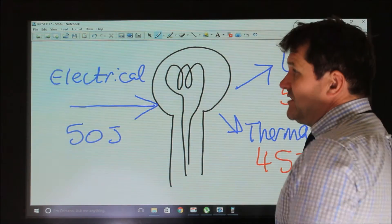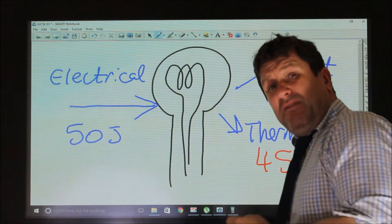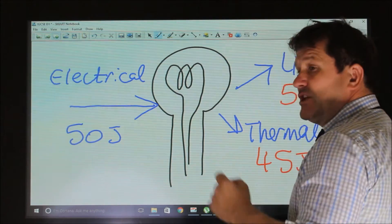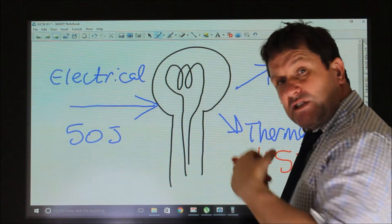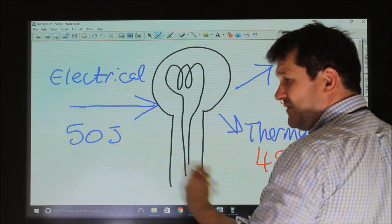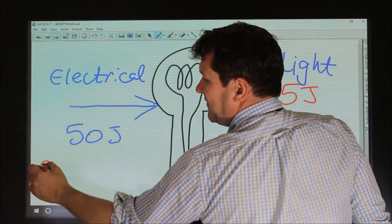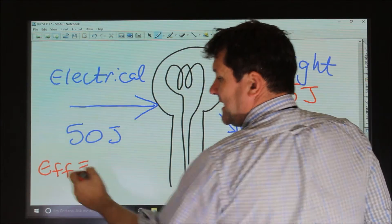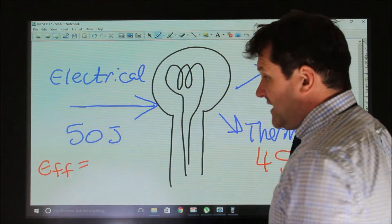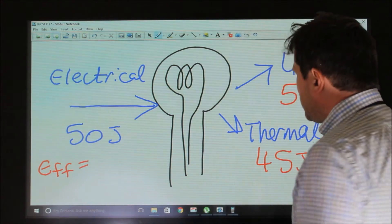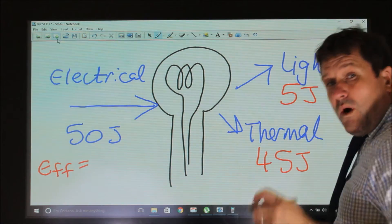Now, the efficiency equation, in order to calculate the efficiency, the efficiency of something is the useful energy out divided by the total energy in. So if we were to look at the efficiency of this light bulb, the efficiency is the useful energy out divided by the total energy in. So the energy out which we want, the useful, is 5.